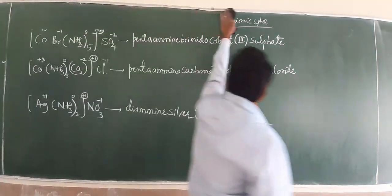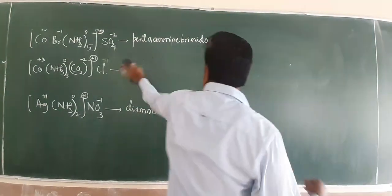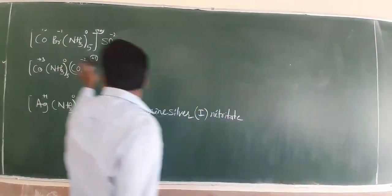After this cationics, let us want to be next category: anionic complex.